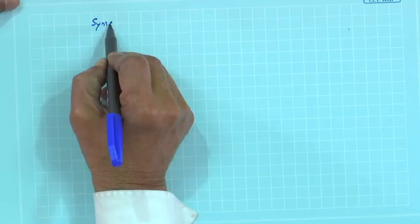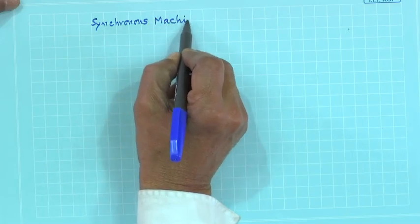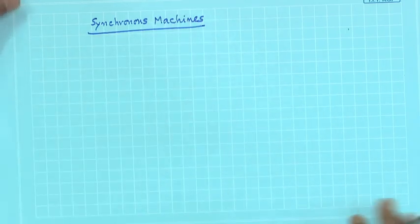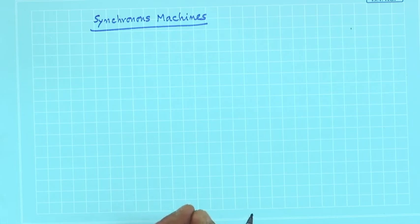Welcome to the next lecture on Electrical Machines II. Today we will start the last topic: synchronous machines. The equivalent circuit is somewhat simpler, but you must be conceptually very clear because so many interesting things happen inside the machine.